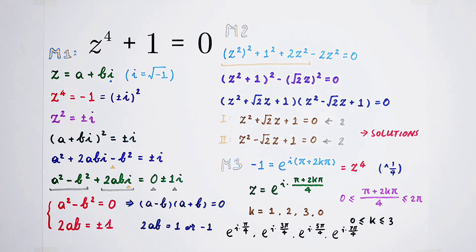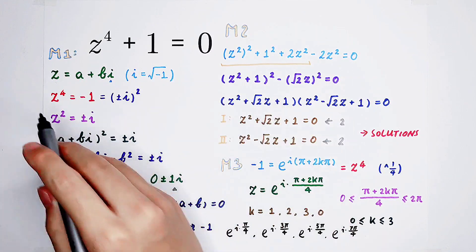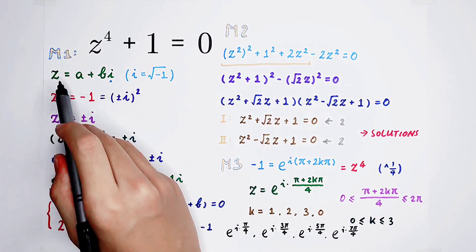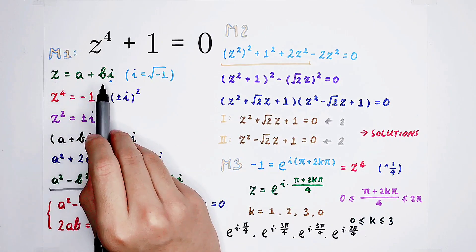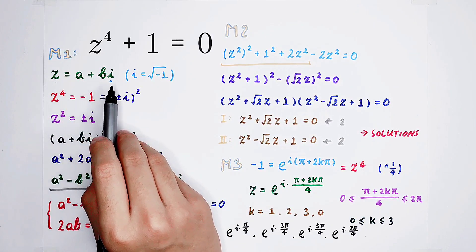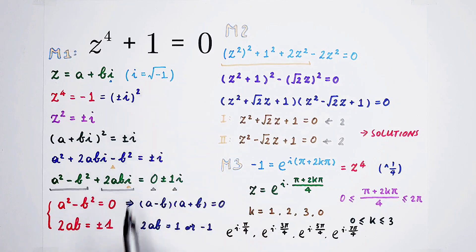From the first two methods, we get z equal to the normal form a plus bi, where a and b are real numbers and i is the square root of negative 1. So we have three methods — which one do you prefer?